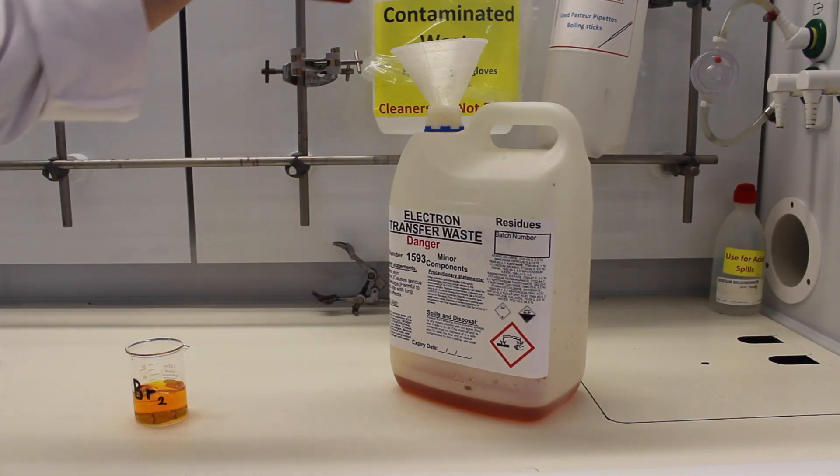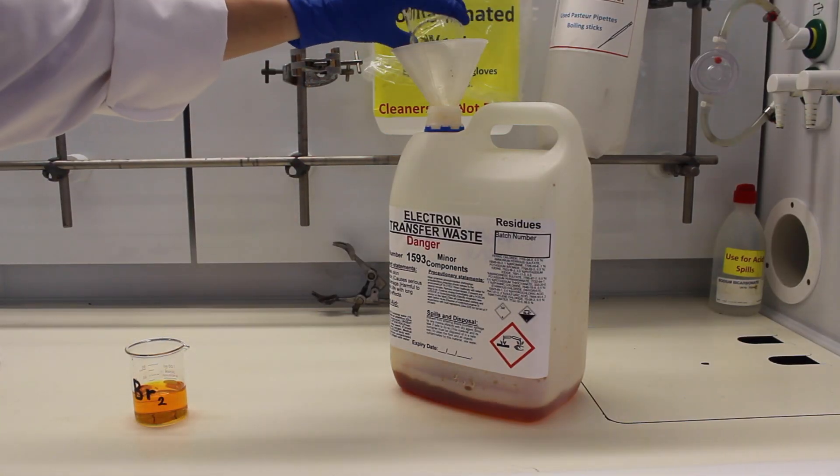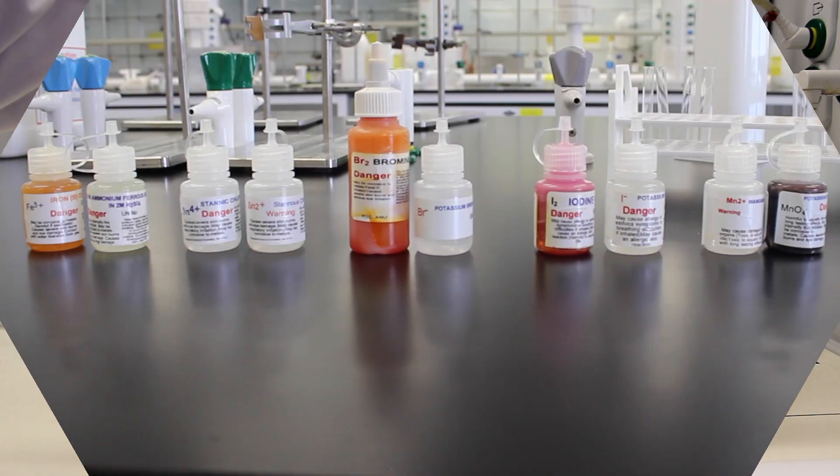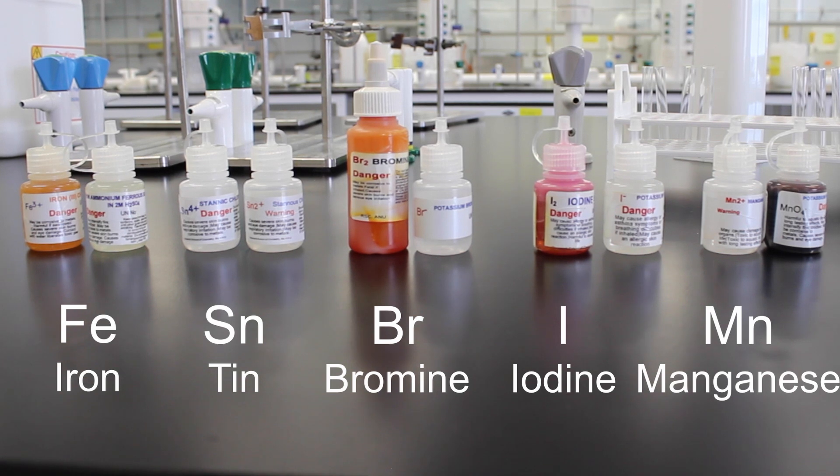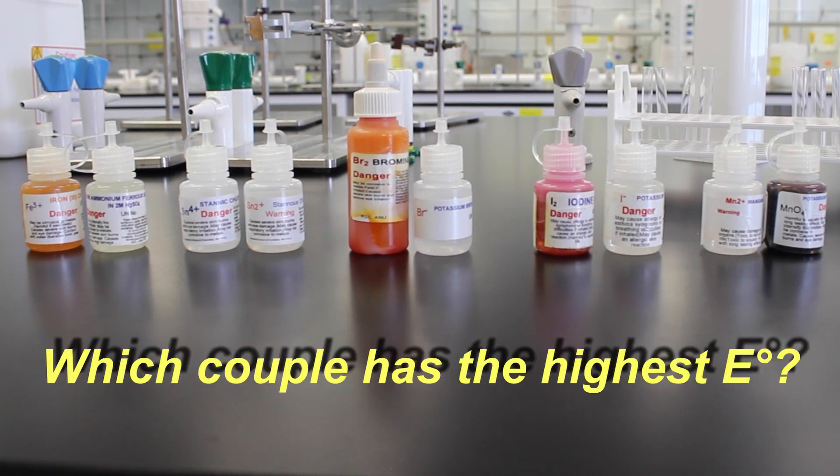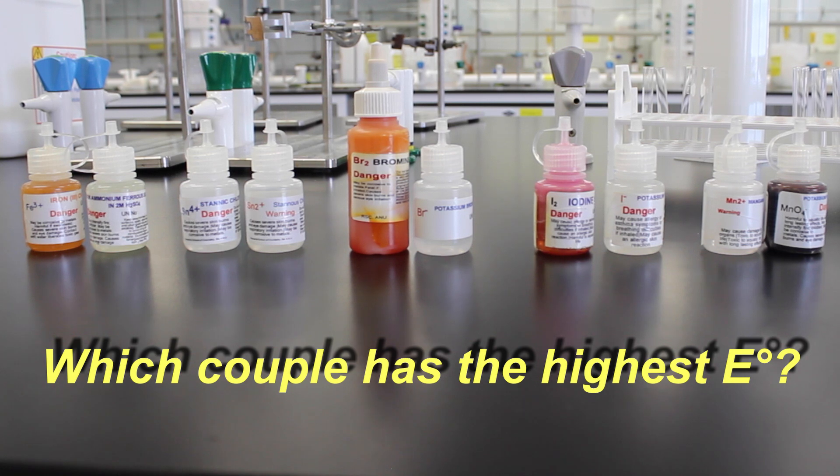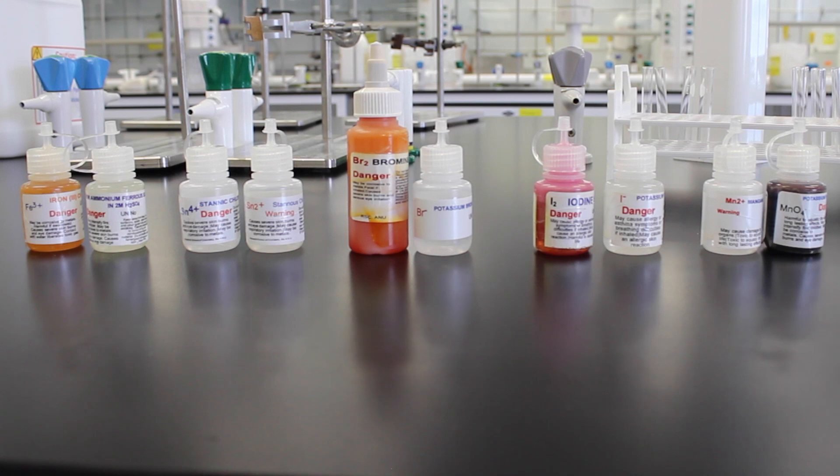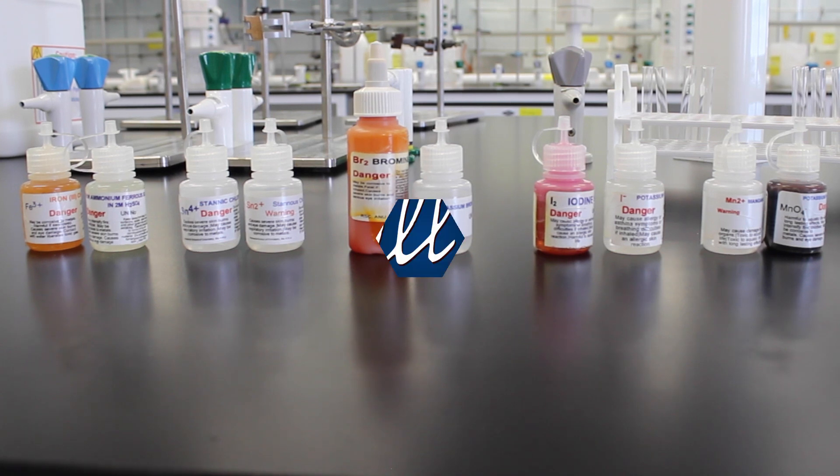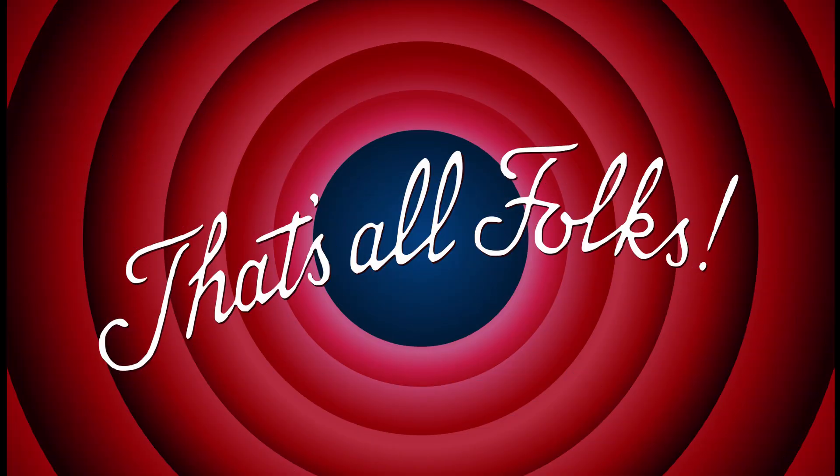Remember at the end of every lab to tip your waste into the appropriate waste container, making sure you read the label. You should now have enough information to rank the five couples that we studied today in order of their standard electrode potential. Keep in mind what the indicators we used were actually testing for, and think about whether that means a species has changed or stayed the same in its solution.